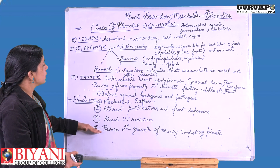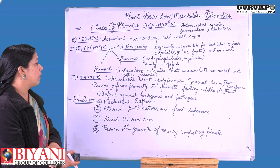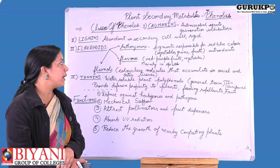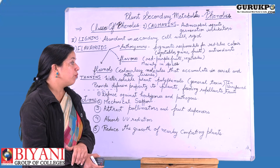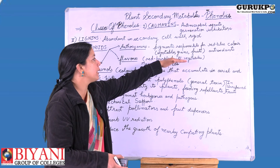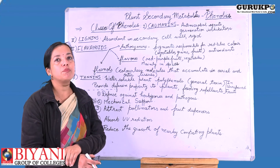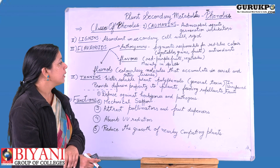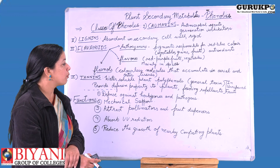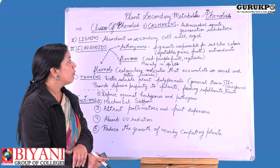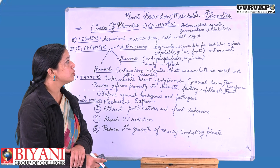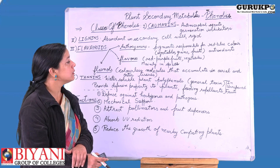Phenolics are phytochemicals produced by plants, well known for their antioxidant properties. If fruits, vegetables, grains, and spices containing a rich quantity of phenols are consumed by humans, they can reduce cases of chronic diseases and also reduce aging, providing anti-aging properties. These phytochemicals can be used as immune boosters, tonics, and to synthesize medicines for their medicinal properties.